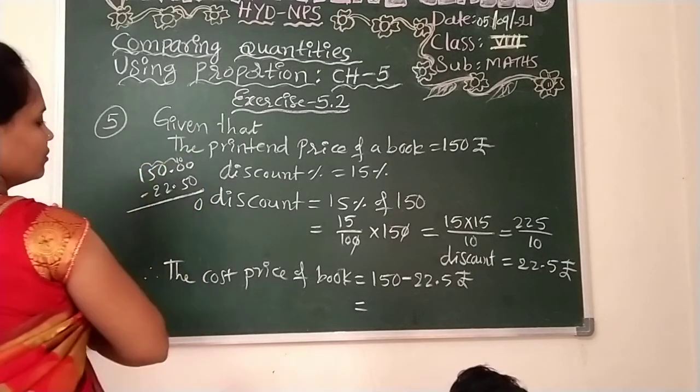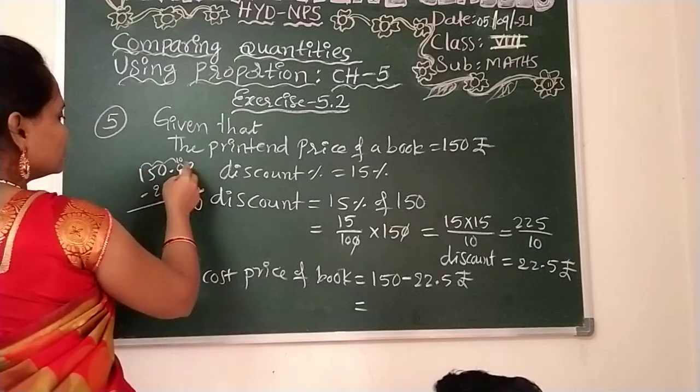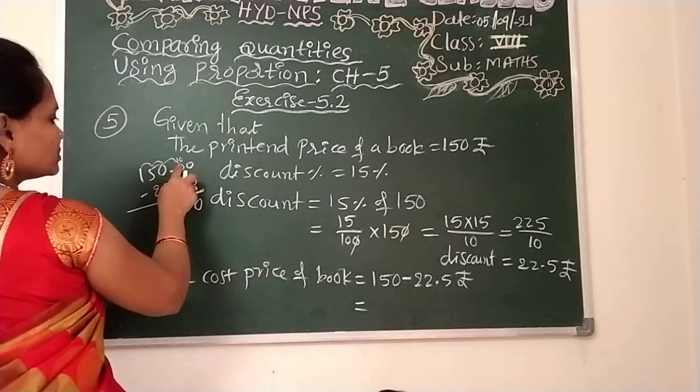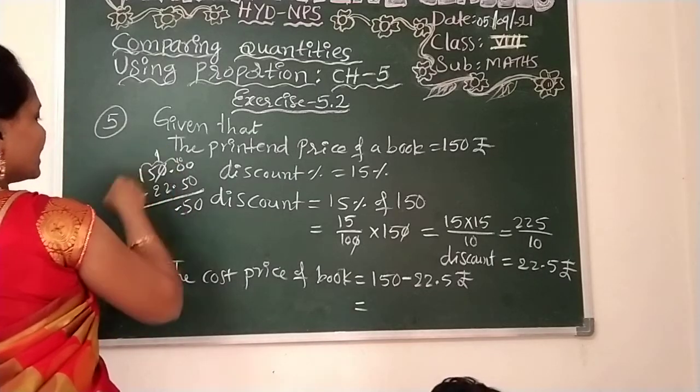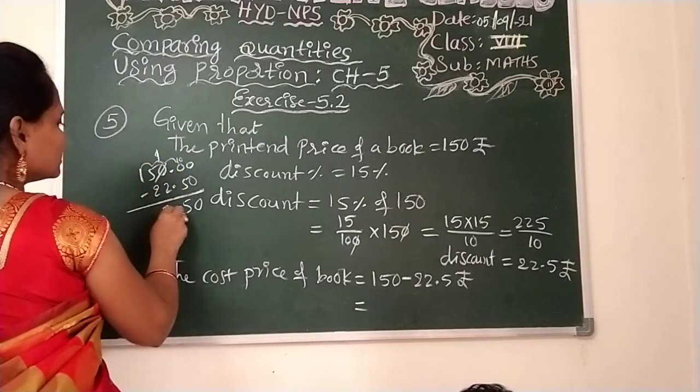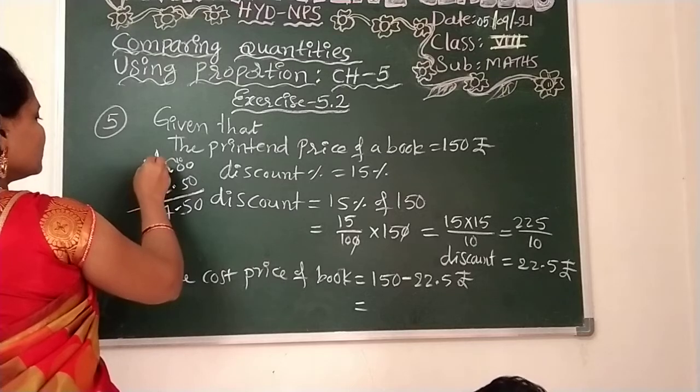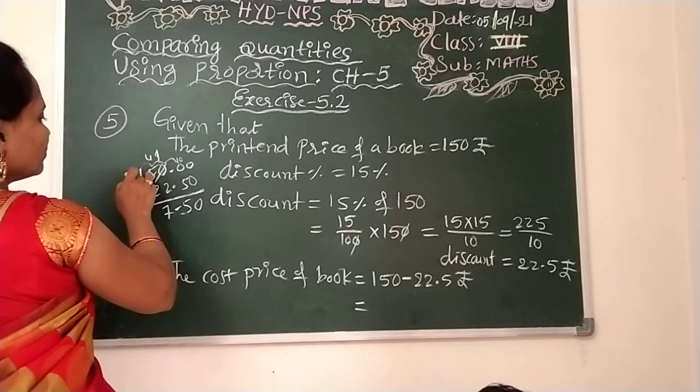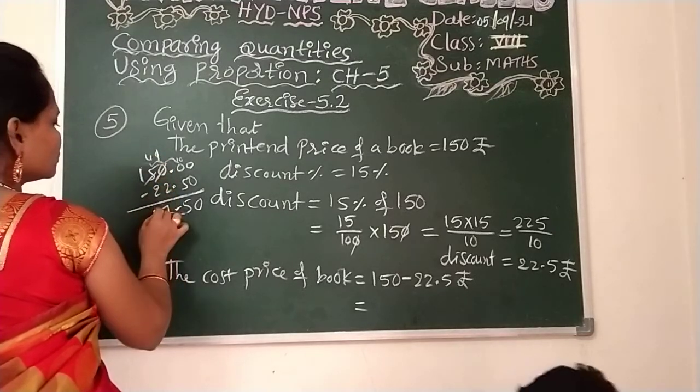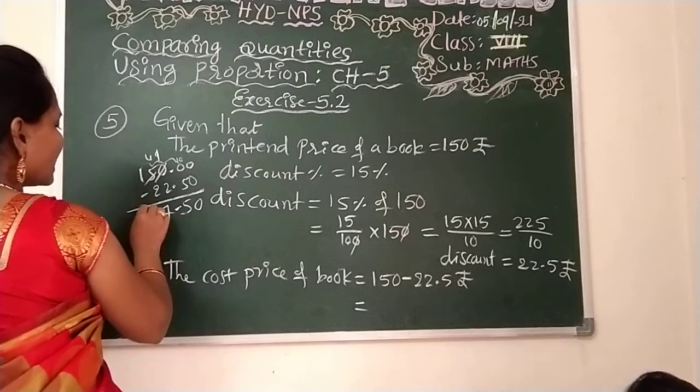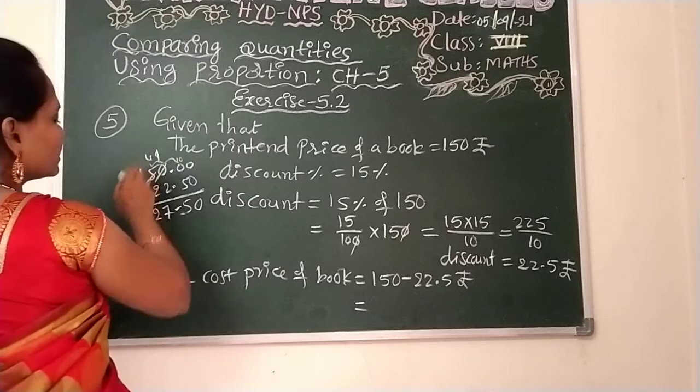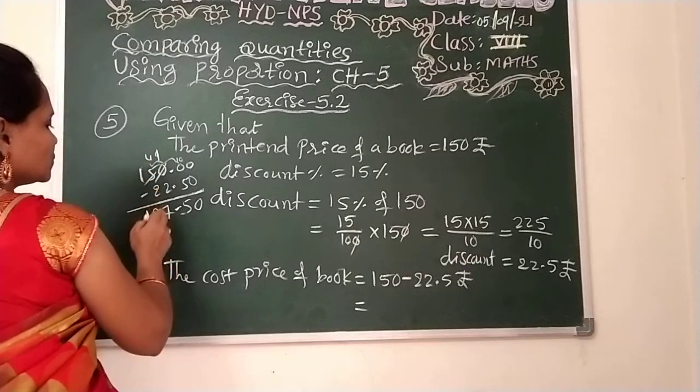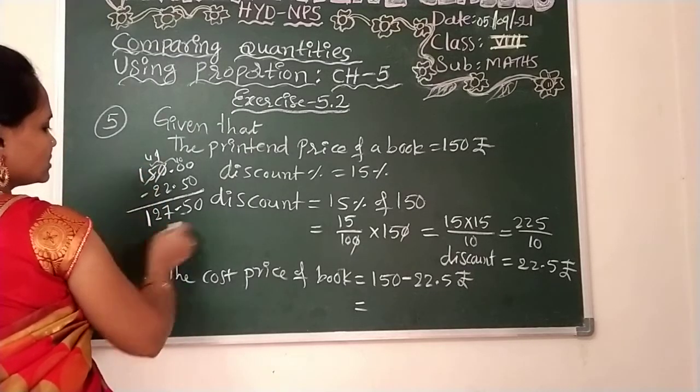Now 10 it will become. 10 minus 5 is 5. Here it will be 9. 9 minus 2 is 7. It will become 4. 4 minus 2 is 2. Here 1, because here from 5 only we took borrow, so 5 will become 4. So 4 minus 2 is 2. 1, 1 as is.